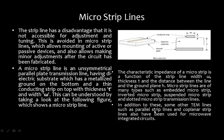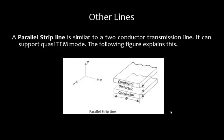Other TEM lines include the parallel strip line, which has two conductors of width W with a dielectric material in between and a separation of T. It is similar to a two-conductor transmission line and supports quasi-TEM mode. The coplanar strip line has two conducting strips on the same substrate surface — one is grounded to provide the return path and the other is the forward path.